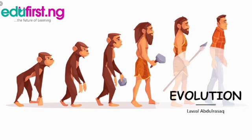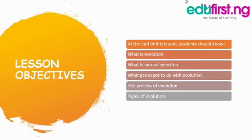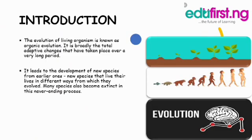Today we are going to be talking on evolution. Here are the lesson objectives for this topic. At the end of this lesson, students are expected to know what is evolution, what is natural selection, what genes have to do with evolution, the process of evolution, and the types of evolution.